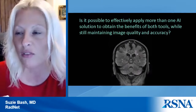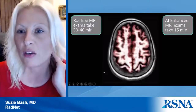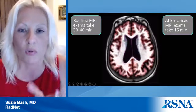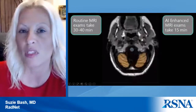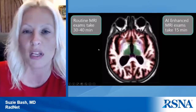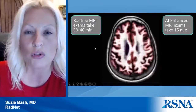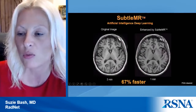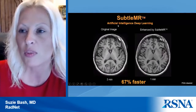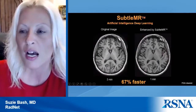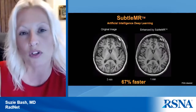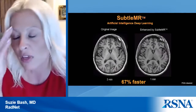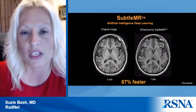Another question I've been asked is whether it's possible to effectively apply more than one AI solution to obtain benefits of both tools while maintaining image quality and accuracy. Routine brain MRI often takes 30 to 40 minutes including on- and off-table time, but at RadNet we use 15-minute exam slots for brain studies. We use deep learning reconstruction to achieve this — in this particular case acquiring images 67% faster. This particular deep learning product, Subtle MR, is vendor-neutral and can be applied to any scanner in your fleet.